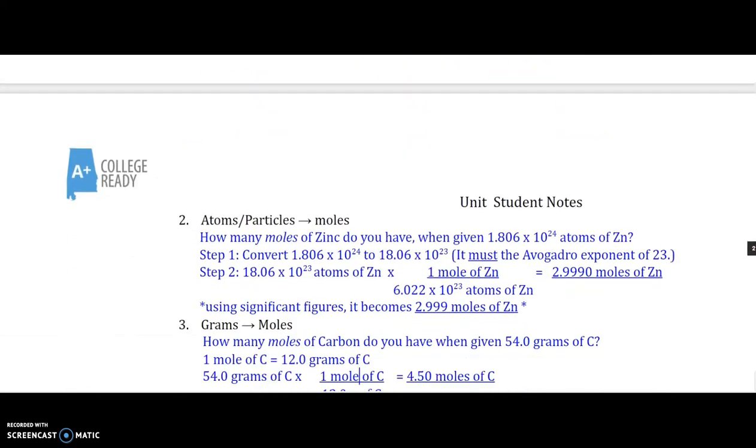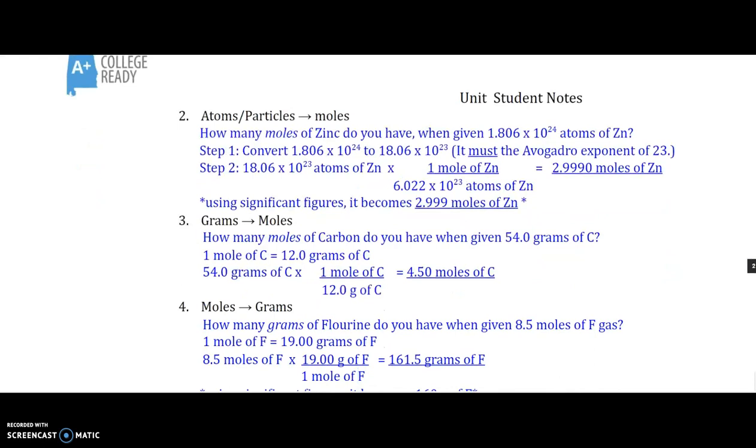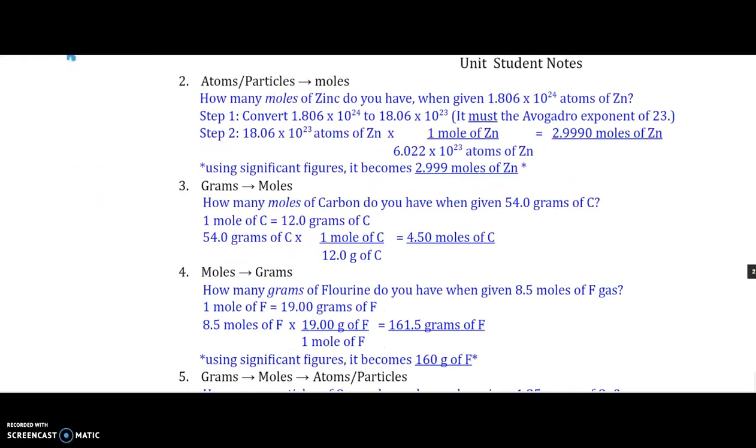Number two, I'm going from atoms to moles. How many moles of zinc do you have when you're given 1.806 to the power of 24 atoms? In step one, I give you the option of converting it to 23. That's simply just so that I can cancel out to the power of 23 and just divide. But you can leave it as the original value and plug it in. Notice your significant figures. You do have four significant figures in the 1.806. So therefore, my answer has to be 2.99 moles of zinc.